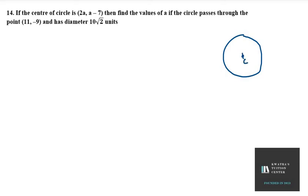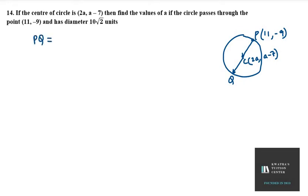First of all, what is the center of the circle here? It is (2a, a−7). They told us that there is a point on the circle — let it be point P, and it is (11, −9). Now, we will consider another point Q. We don't know its coordinates, but we are given that the diameter PQ is 10√2 units.